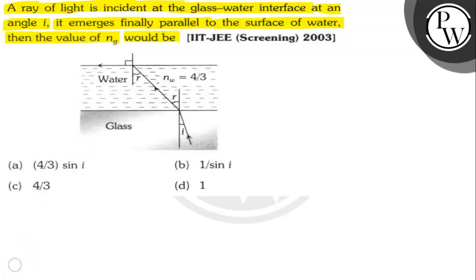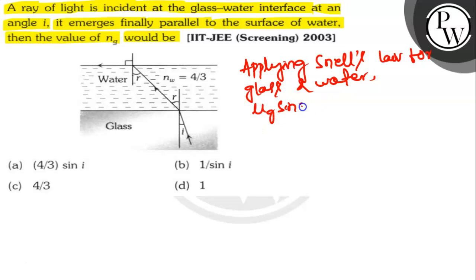Let's find out. Applying Snell's law for glass and water, μG sin I is equal to μW sin R. This is equation 1.